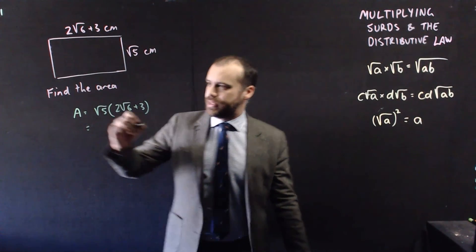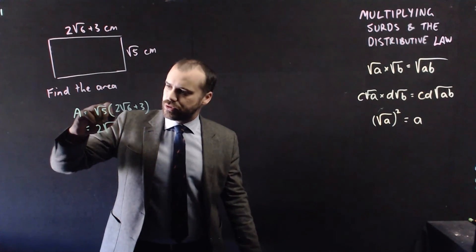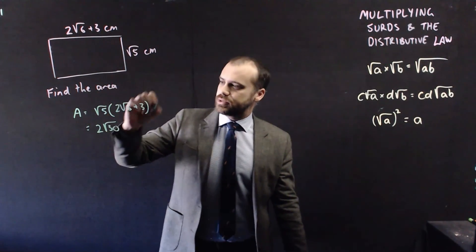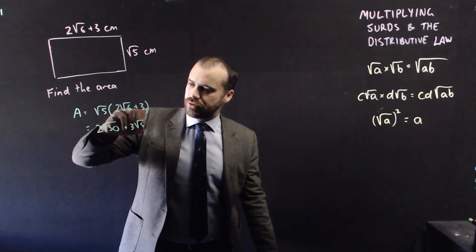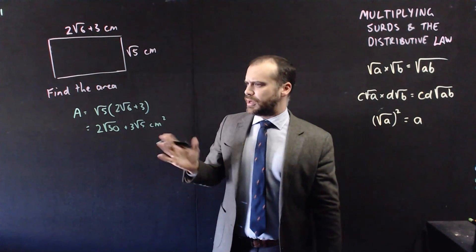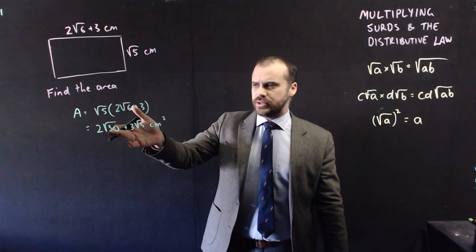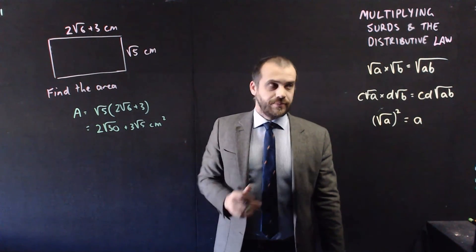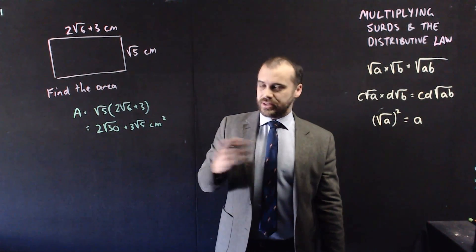We get 2 root 5 times 6 is 30, and then root 5 times 3 is 3 root 5 centimeters squared. Can we do anything with the 30? No, we can't simplify that any further. That's the answer. Alright, that's multiplying surds and the distributive law.